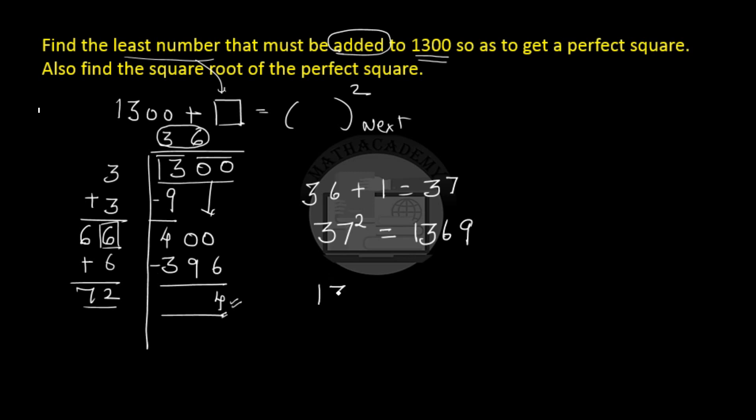And how much do we have? We have 1300. So if we add 69 which is obtained by subtracting 1300 from 1369, then 69 is the least number that has to be added.